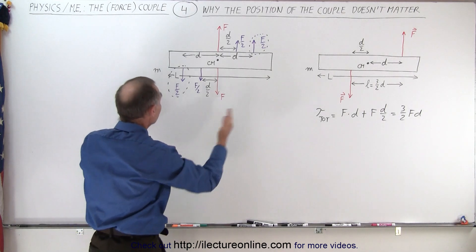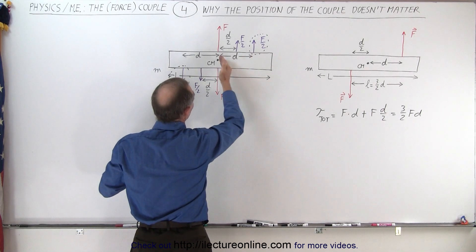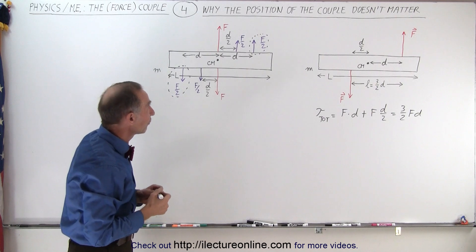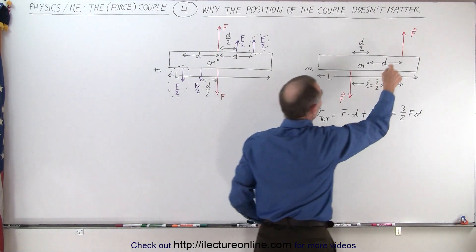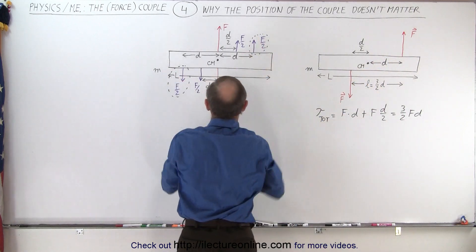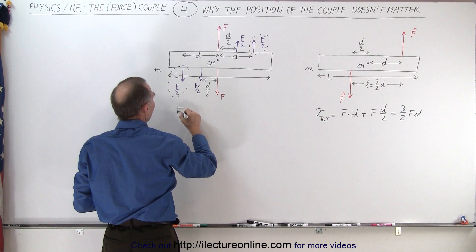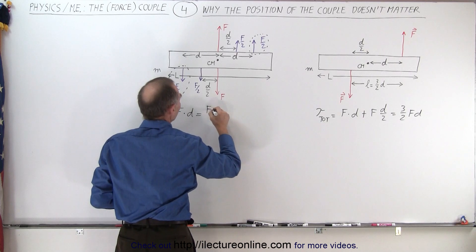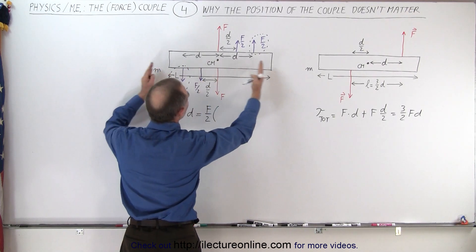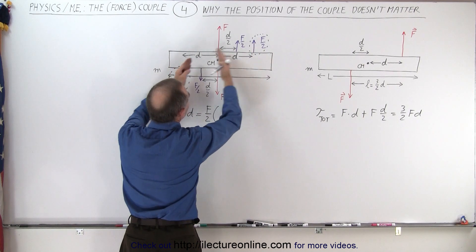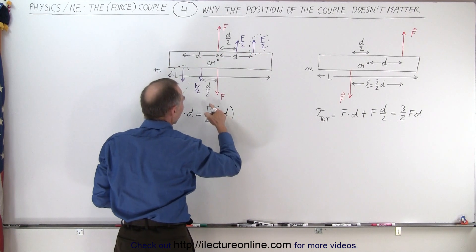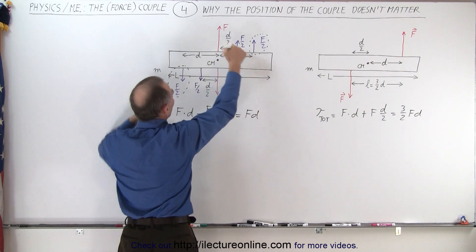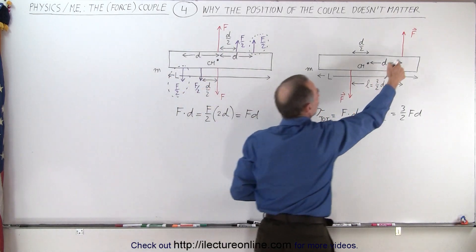This force by itself is equivalent to the same force moved so that the line of action is at the center of mass, added to these two forces which form a couple. That couple is equally distributed across the center of mass — distance D from the center mass to the right, and D to the center mass to the left. The torque here is F times D. We verify this equals the couple: F over 2 multiplied by the total distance between the two forces, which is 2D. And F over 2 times 2D is also F times D. So this force with this couple is equivalent to that force.